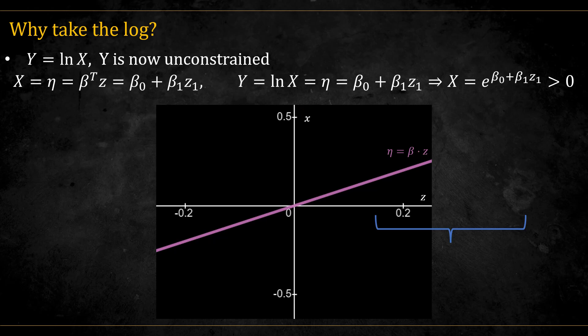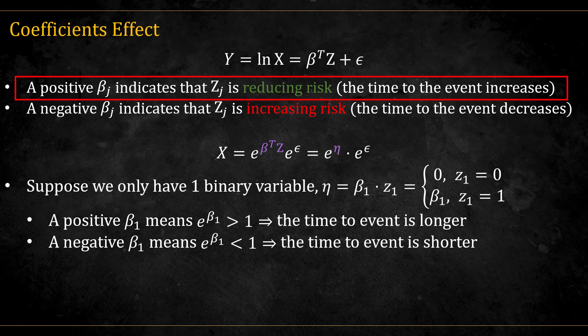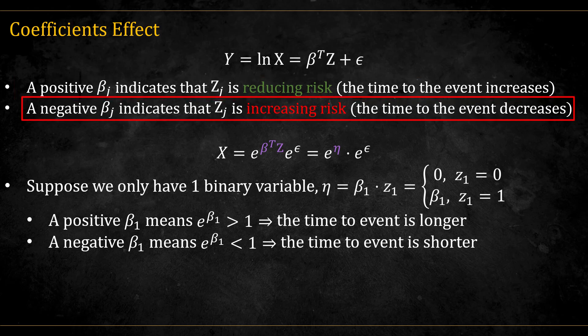So, for the rest of the video, I will assume this transformation. Notice that a positive beta increases the time to event, meaning that it decreases the risk. And negative beta decreases the time to event, meaning it increases the risk. This is important. The coefficients interpretation is reversed between AFT and Cox pH.